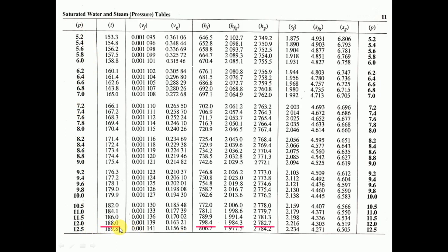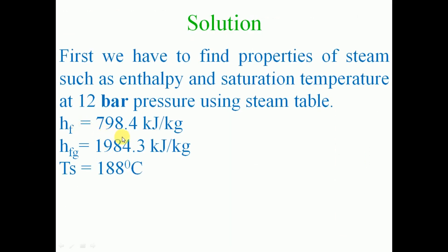HF, that is sensible heat, is 798.4 kJ/kg; HFG, the latent heat of vaporization, is 1984.3 kJ/kg; and HG, the enthalpy of dry saturated steam, can also be taken directly. From the steam table: HF = 798.4 kJ/kg, HFG = 1984.3 kJ/kg, and saturation temperature = 188 degree Celsius.